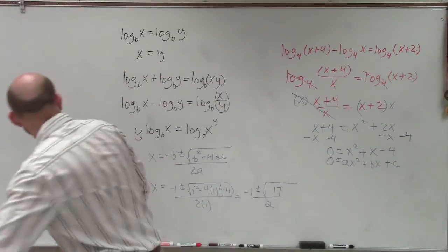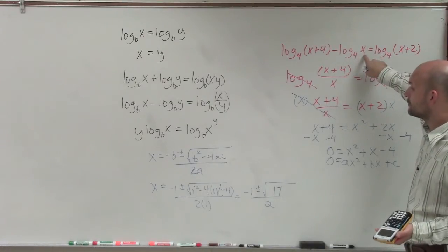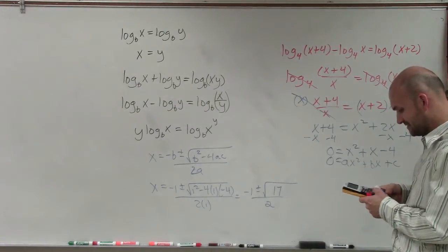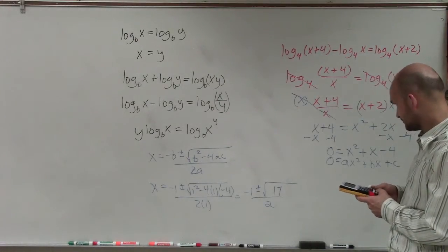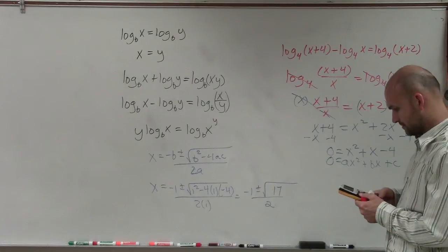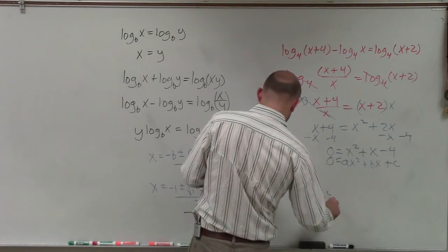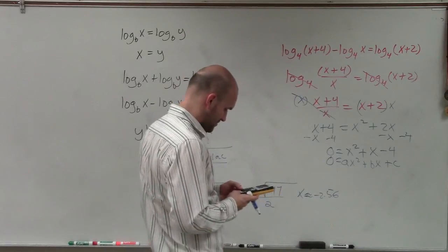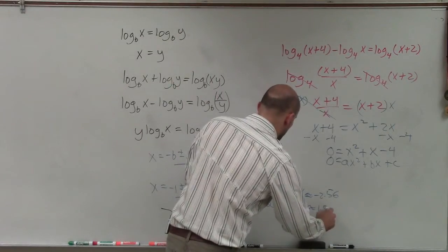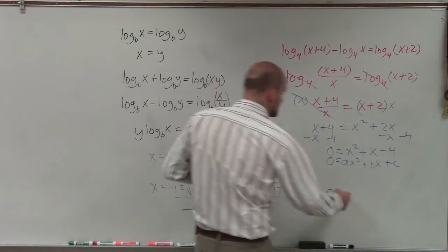Now, the square root of 17 is going to be an irrational number. I already notice that if I have a negative value, it's not going to work for this logarithmic equation. So evaluating both: x equals (negative 1 minus square root of 17) divided by 2, which is approximately negative 2.56 — and x equals (negative 1 plus square root of 17) divided by 2, which is approximately 1.56. Remember, you can't plug a negative number into our logarithmic equation, so the negative answer is going to be extraneous.